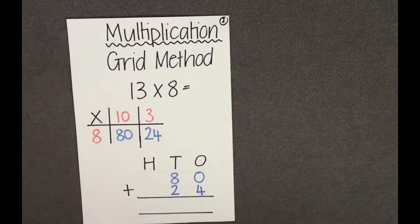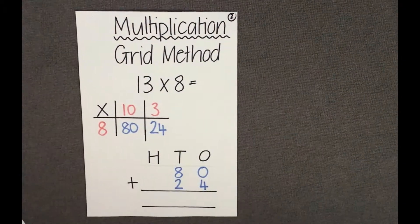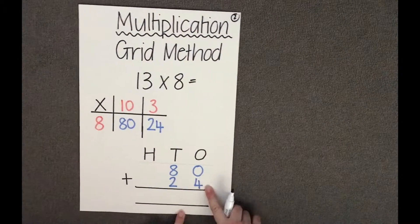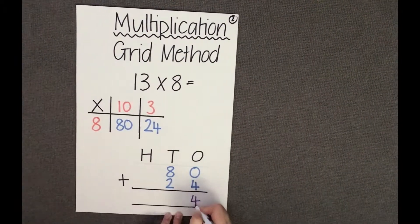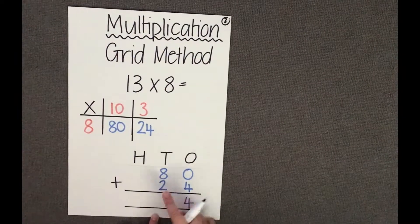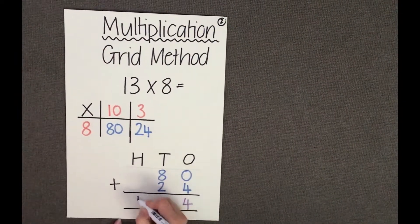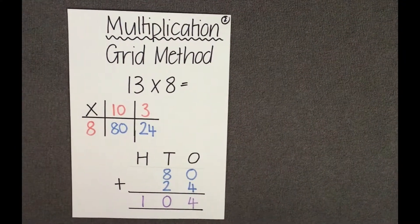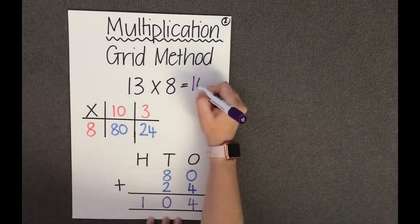We use our column method for addition and therefore we have to start with our ones. 0 ones add 4 ones is 4 ones. 8 tens add 2 tens is 10 tens. And 10 tens is the same as 100. And therefore our answer to 13 times 8 is 104.